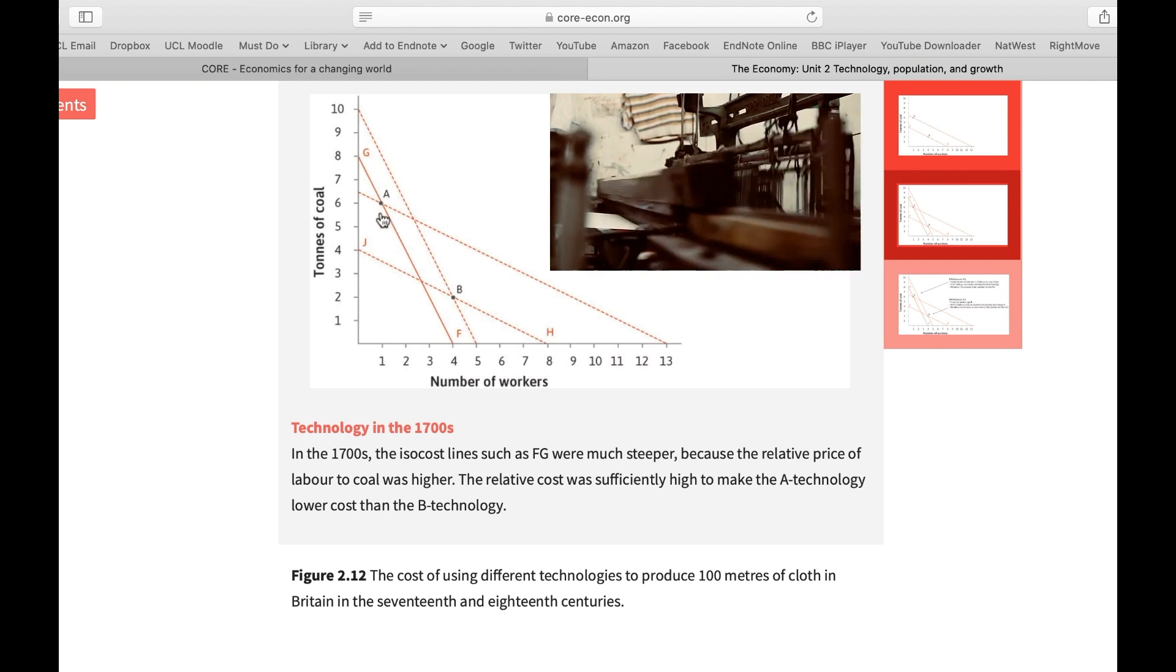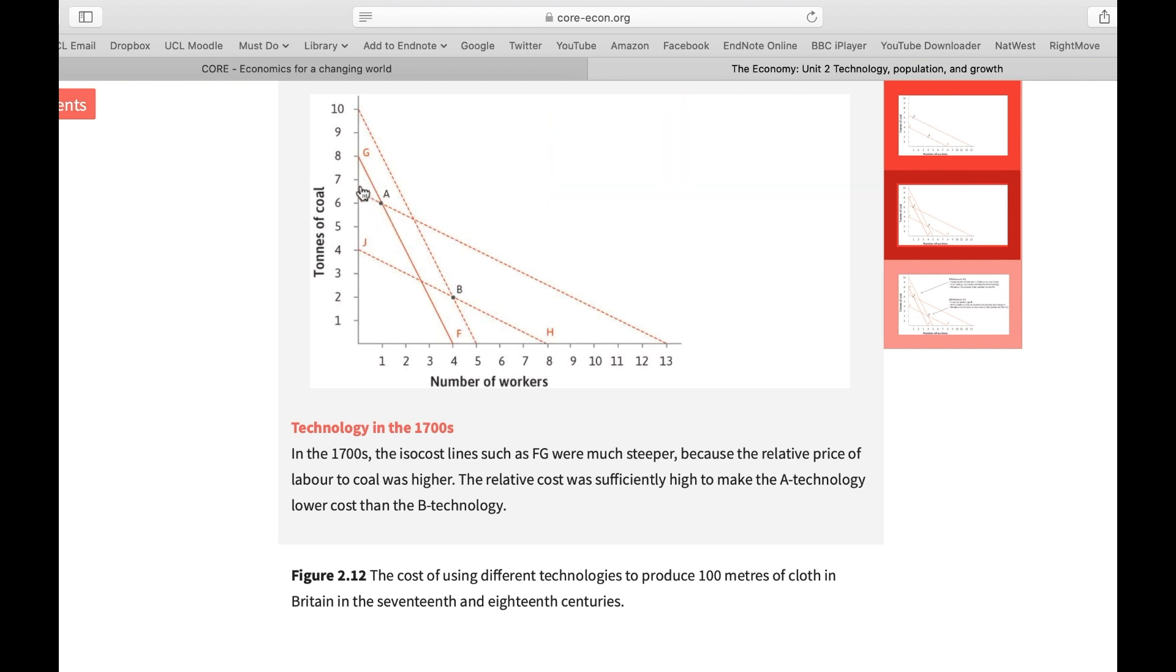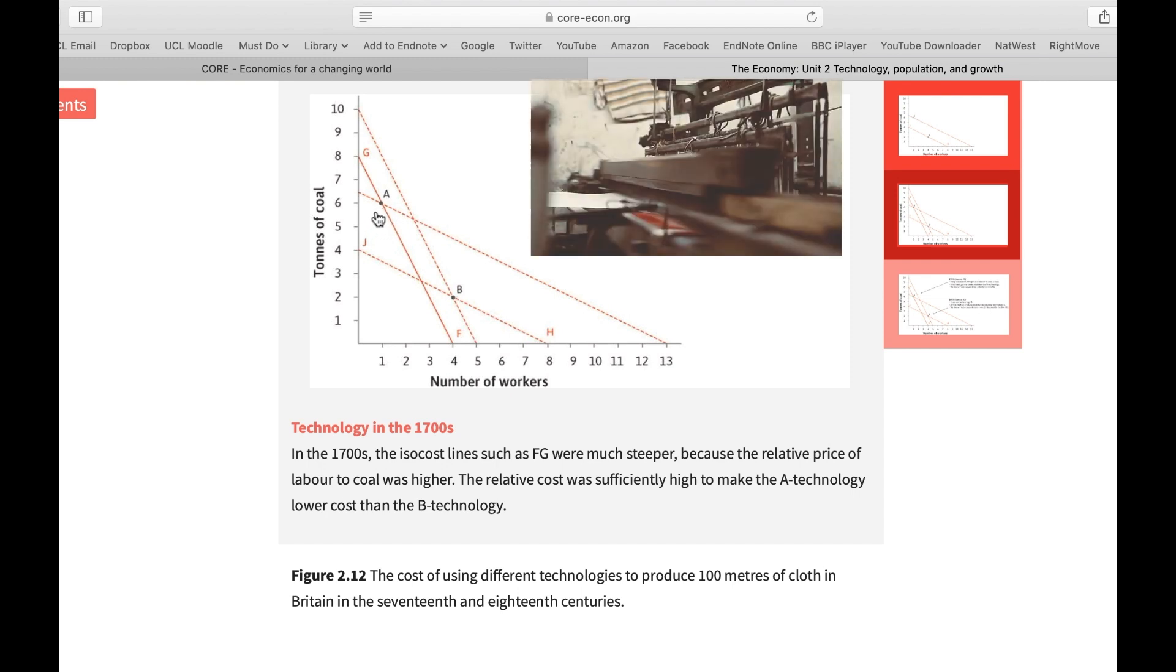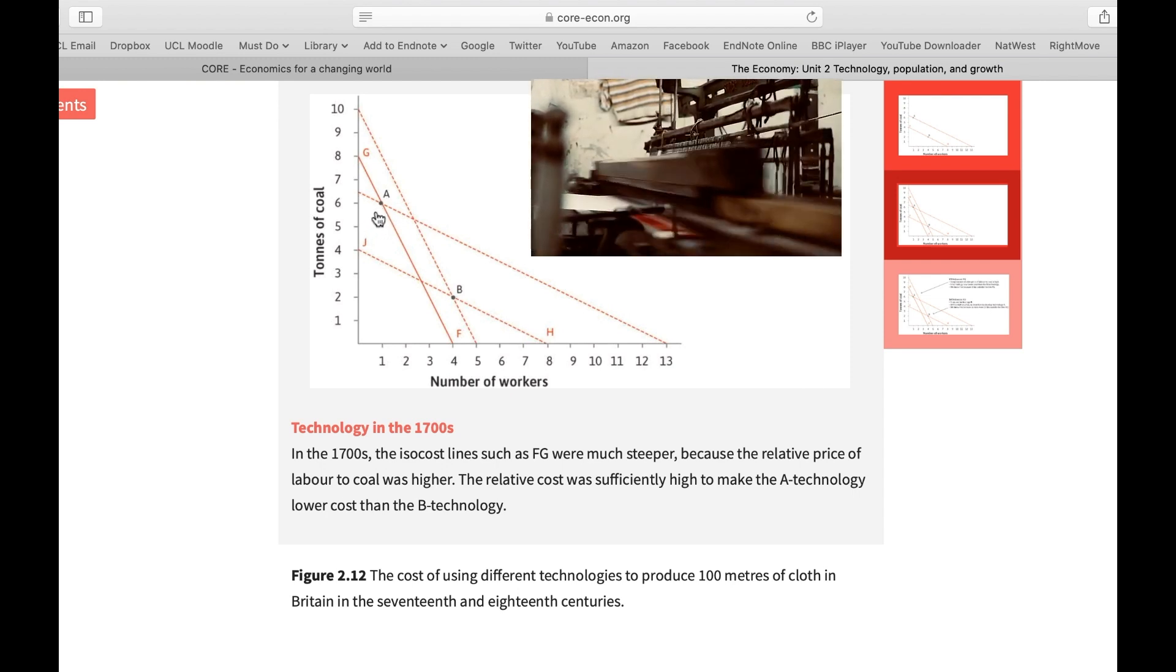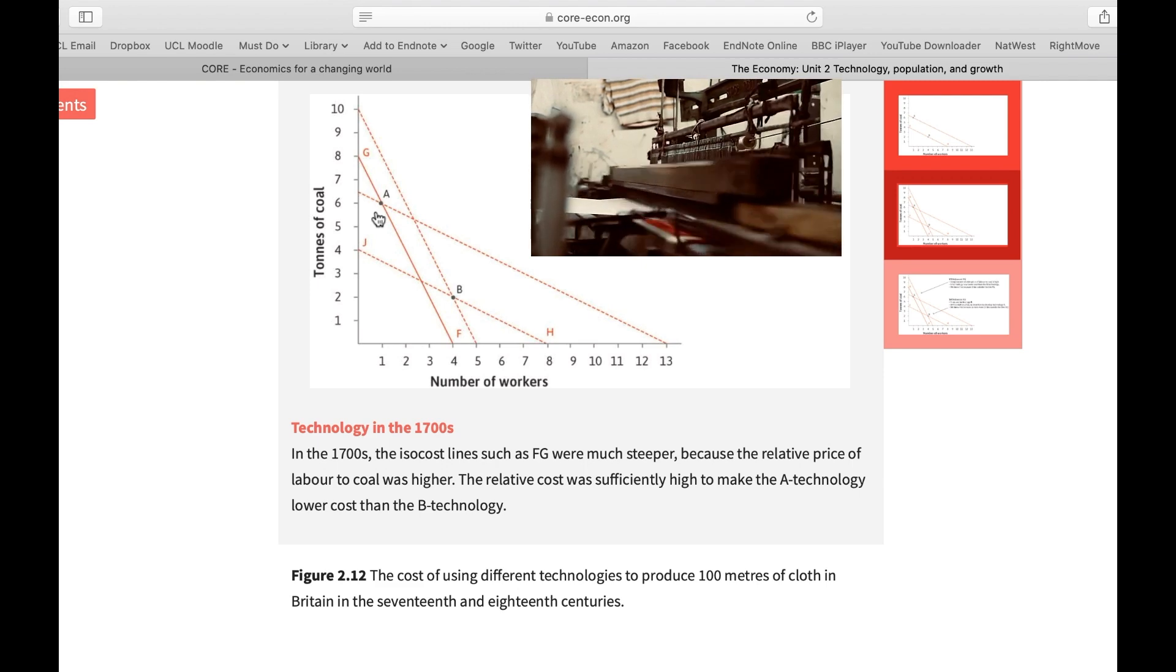It had an incentive to invent new automated technologies. As you can see now in this new isocost curve, Technology B is more costly and Technology A makes economic sense. Because of this incentive, we got this new technology.